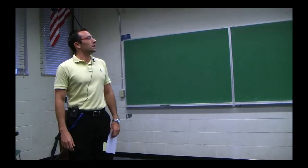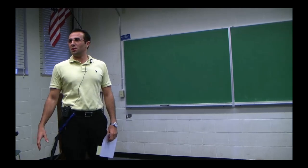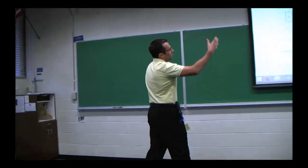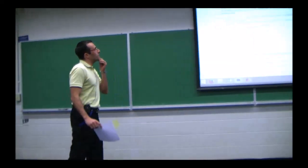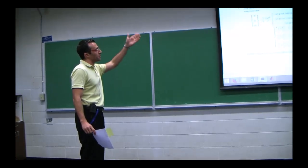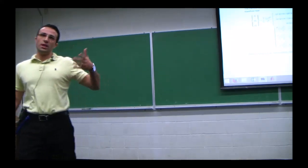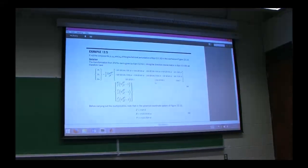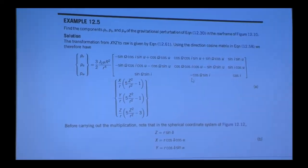Alright guys, so I'll compensate for last time by basically not even touching the board today if I can. I just want to go over a little more on the Gauss Variational Equations, but many of the steps for J2 in particular are here in the book, and there's really no value for us to go through them in detail. I'll just project the pages and explain what's going on, which is pretty much what we did last time. So this would be J2.